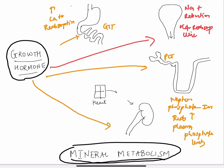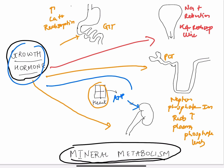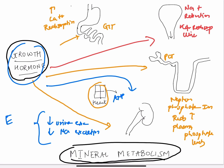The fourth effect is on the hormone secreted by the heart — the ANP. The ANP action on the kidney is inhibited by growth hormone. So, when growth hormone acts, the action of ANP on the kidney is removed, resulting in decreased urine excretion, decreased sodium excretion, and the total effect being ECF volume maintenance.